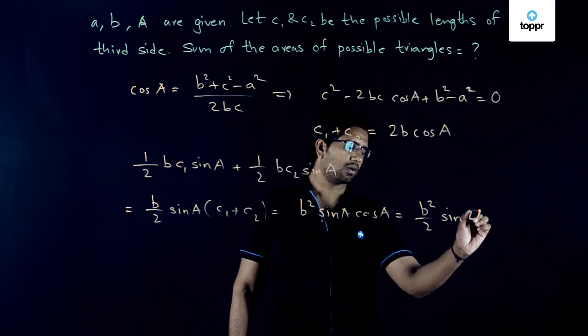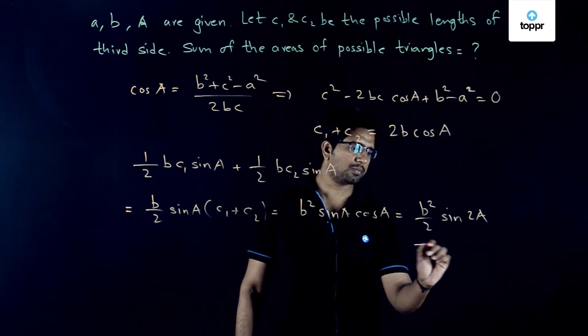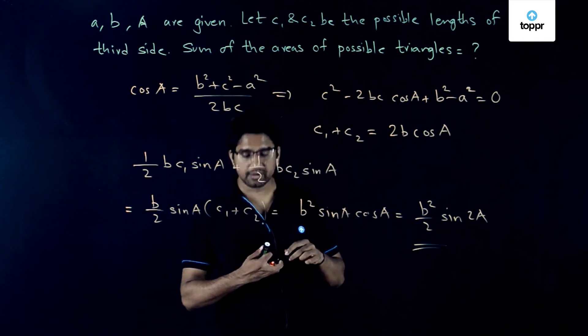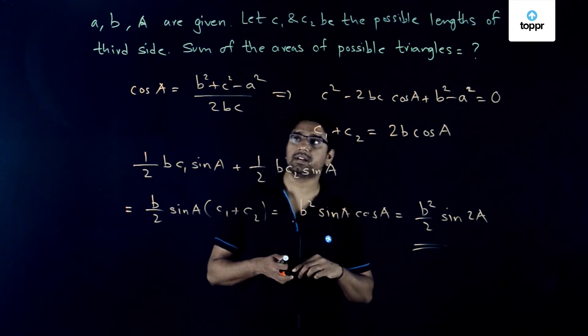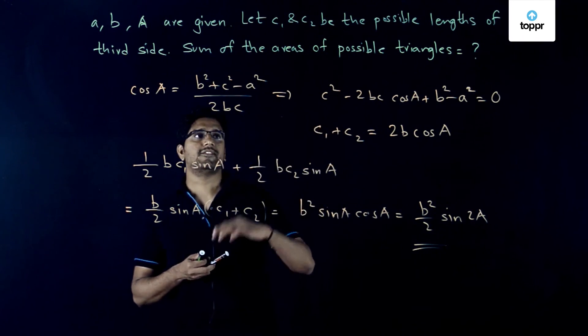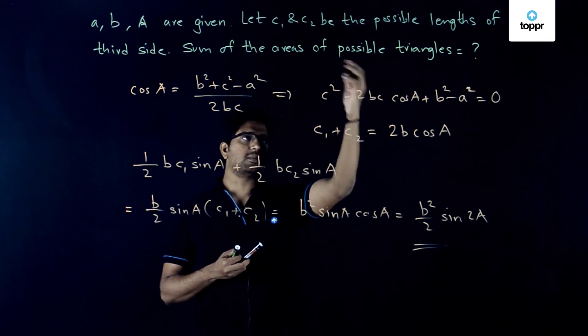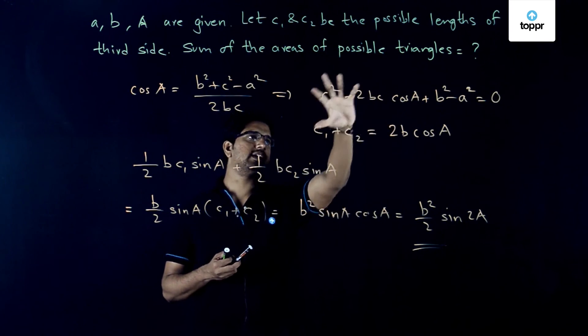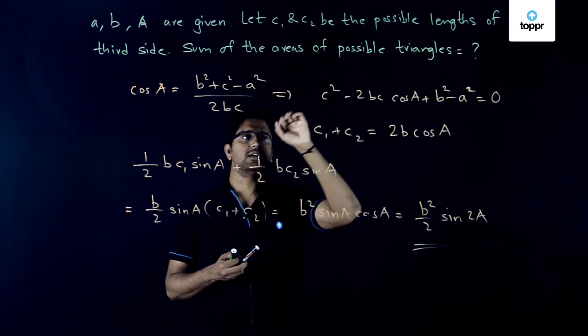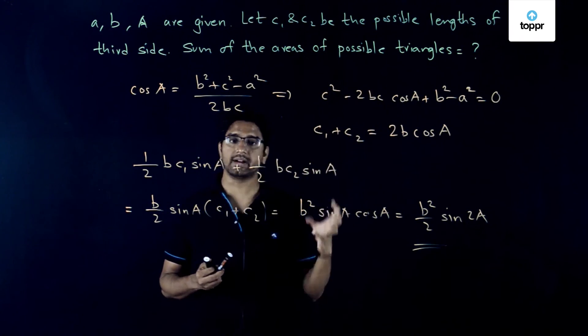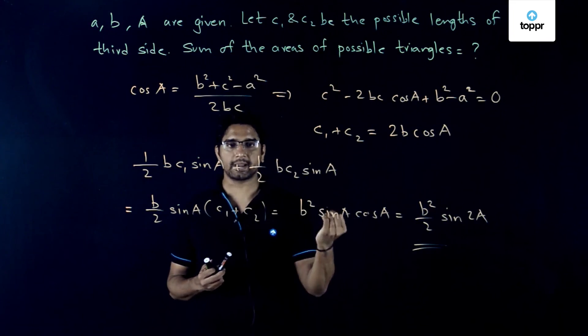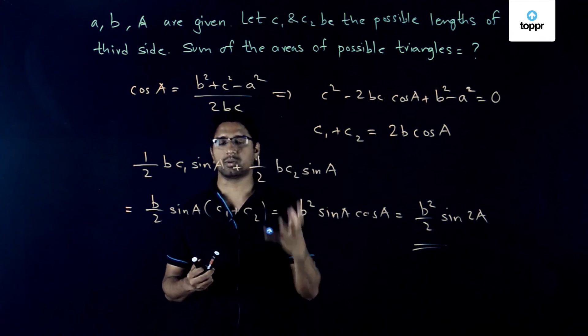This was a very good problem because it made use of the critical fact that the sum of the roots of the quadratic was applied, and the quadratic itself was obtained using the cosine rule.